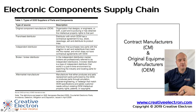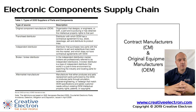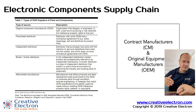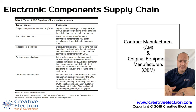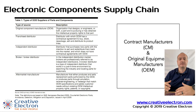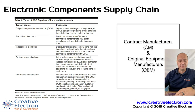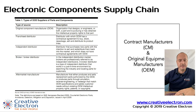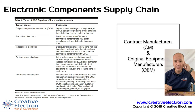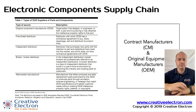The independent distributors actuate in what we call the gray market — they don't have a relationship with the OCM. What these IDs do is market components that have come to them from excess purchases. For example, a contract manufacturer doesn't need all the components they have, so they have excess inventory. Independent distributors buy and stock this inventory, and supply it back to you when you need it.